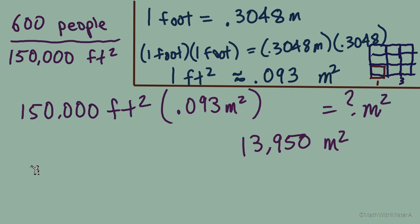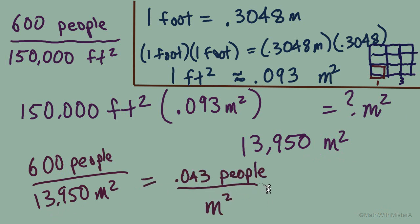How about for a nice finish, we take this rate of people per square meter and convert this down into a unit rate. We would still divide numerator by denominator and we get 0.043 people per square meter, approximately.